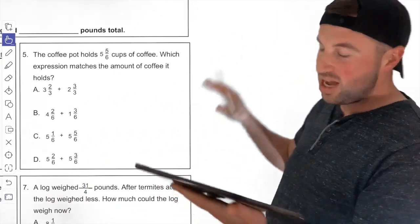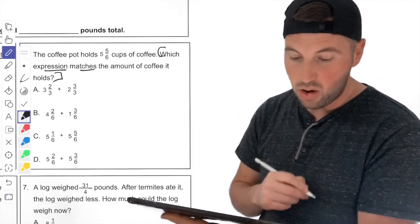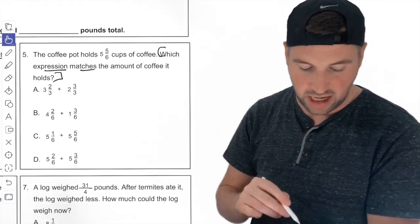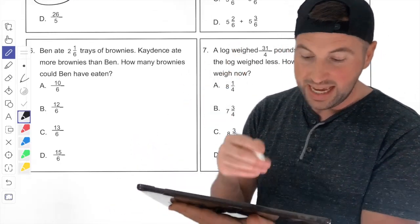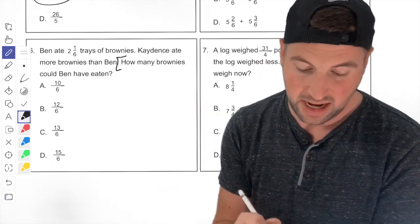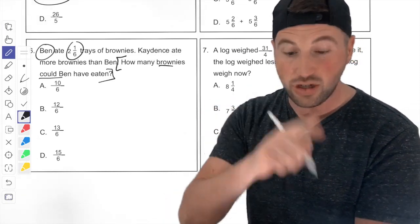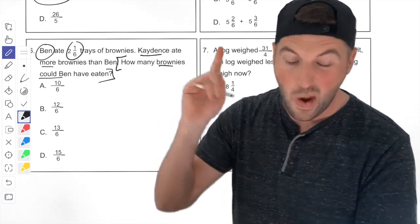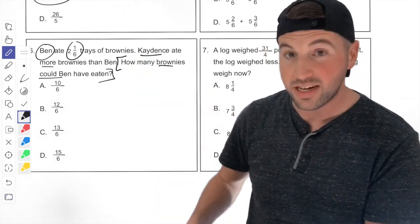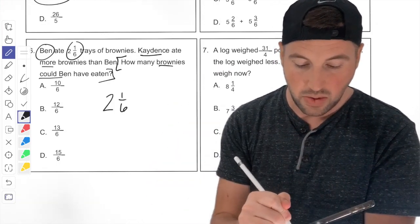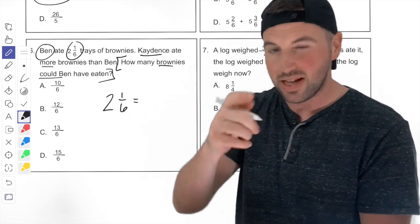Number five: the coffee pot holds five and five-sixths cups of coffee. Which expression matches the amount it holds? I'll let you tackle that one on your own — I'll show the answer at the end. Number six: Ben ate two and one-sixth trays of brownies. Cadence ate more brownies than Ben. How many brownies could Cadence have eaten? Ben ate that many trays, and Cadence ate more. You just need to find the one fraction that is more than two and one-sixth. All the choices are improper fractions, so convert two and one-sixth to an improper fraction, then find Cadence's fraction that's greater.